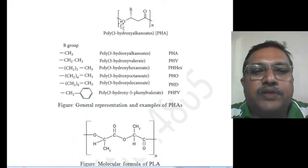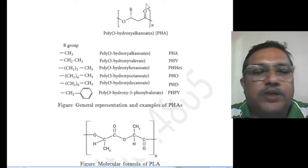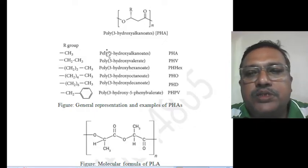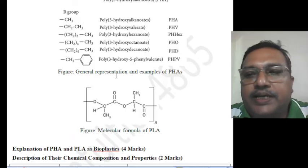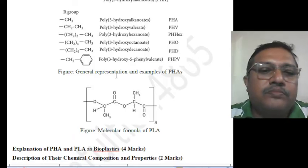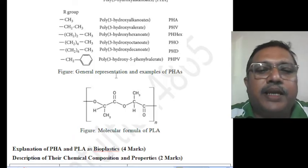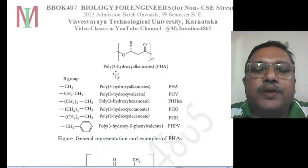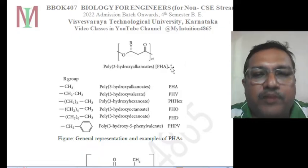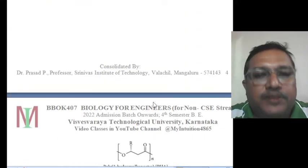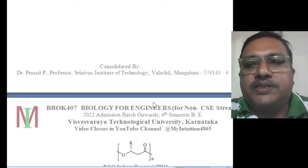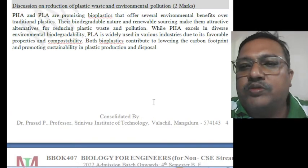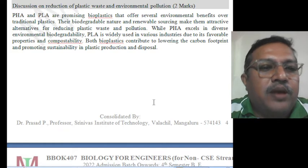If you look at the bond structure, it consists of carbon-oxygen bonds — C-O and C-O — that is called ester linkage. Both PLA and PHA contain ester linkages and are polymers, so we call them polyesters. Polyester clothes are very well known.